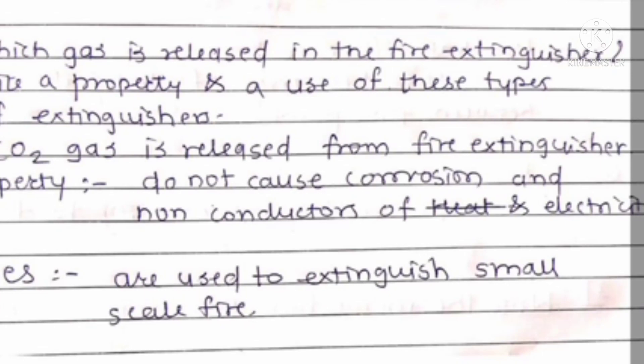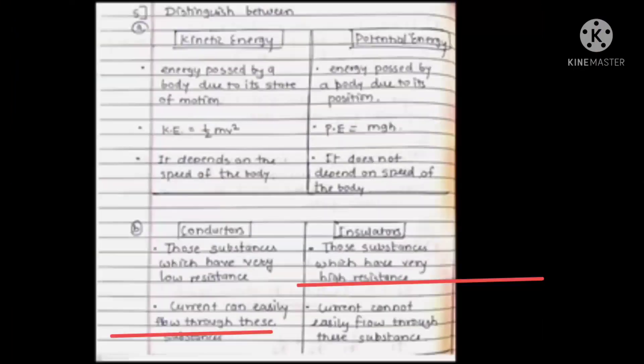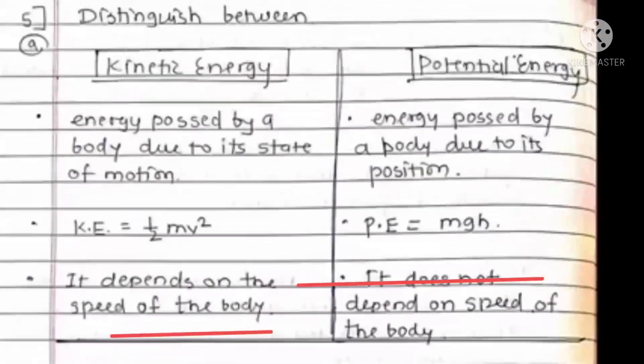Next question: Which gas is released in the fire extinguisher? Write the property and use of these type of extinguisher. Carbon dioxide gas released from the fire extinguisher. Property: do not cause corrosion and non-conductor of electricity. Uses: these type of fire extinguishers are used to extinguish small scale fire.